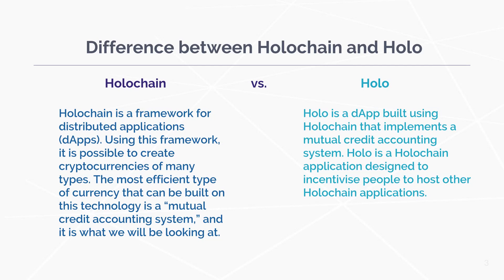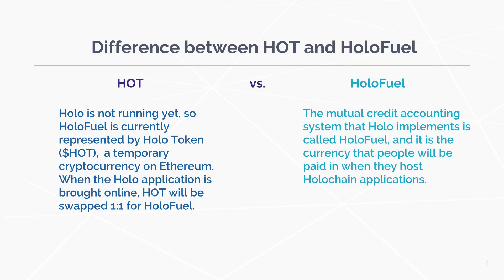Holo is a dApp built using Holochain that implements a mutual credit accounting system. It is a Holochain application designed to incentivize people to host other Holochain applications. Now, the difference between HOT and HoloFuel: Holo isn't running yet, so HoloFuel is currently represented by HoloToken, which is a temporary cryptocurrency on Ethereum. When the Holo application is brought online, HOT will be swapped one-for-one for HoloFuel. HoloFuel is the mutual credit accounting system that Holo implements, and it is the currency that people will be paid in when they host Holochain applications.